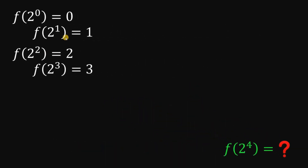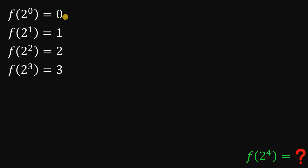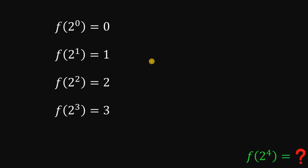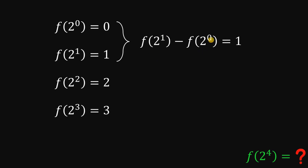Alright, so given that f is a cubic function that satisfies these conditions — f of 2 raised to 0 is 0, f of 2 raised to 1 is 1, f of 2 raised to 2 is 2, f of 2 raised to 3 is 3 — what is the numerical value of f of 2 raised to the fourth power? To answer this, let's observe the given. When we subtract the first equation from the second, we get f of 2 raised to 1 minus f of 2 raised to 0 equals 1.